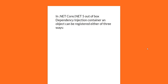In .NET Core or .NET 5, in the out-of-box dependency injection container, an object can be registered in one of three different ways. The first way is transient. Transient basically means an object is created every time it is requested from the container. It does not matter how many times the object has been called — every time it is called, a new instance will be created and returned. Transient objects are disposed at the end of each request.